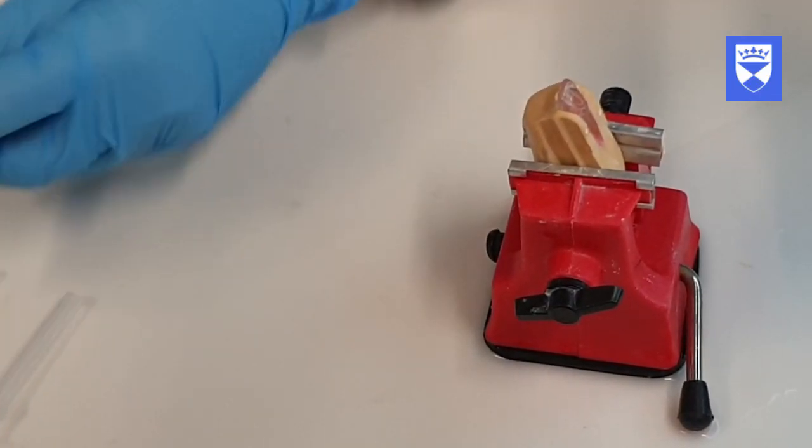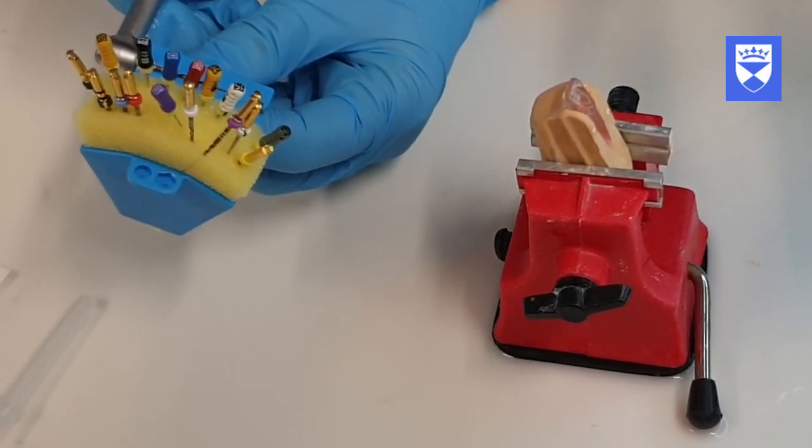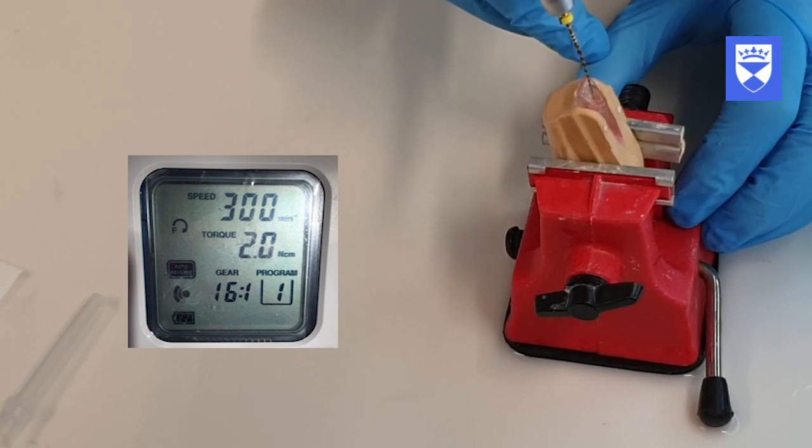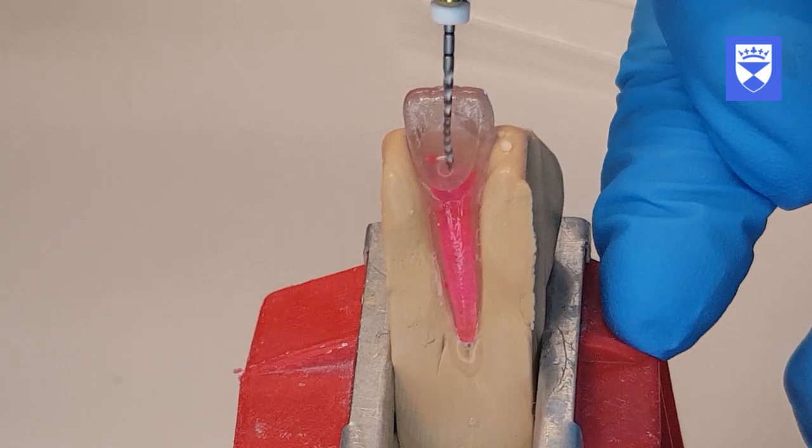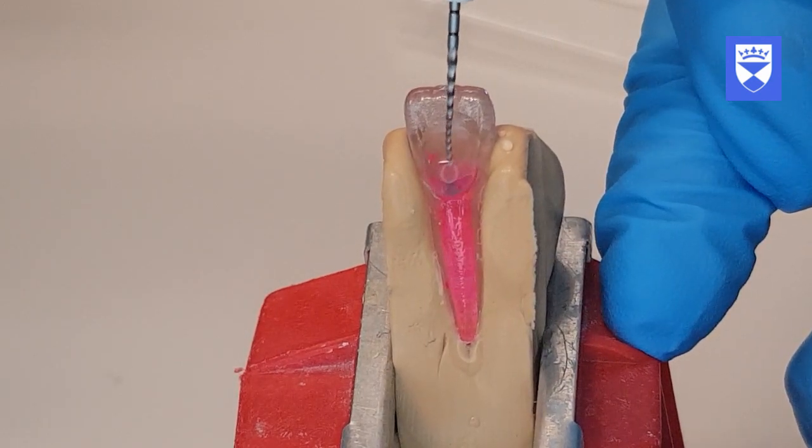The pro glider rotary file should be set to the working length. It is important to use the rotary files with the correct speed and torque on the endodontic motor. Carefully negotiate the file to the working length of the teeth to expand the glide path.